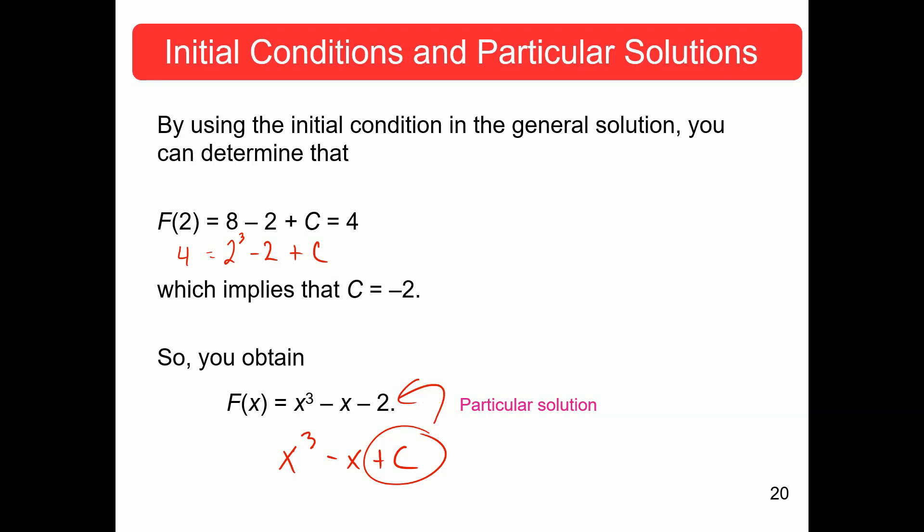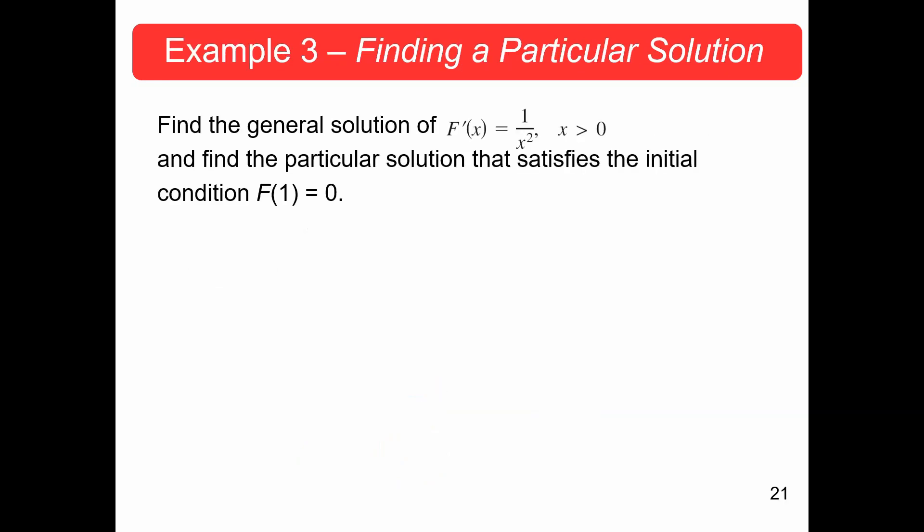All right, so let's actually look and see if we can figure this out on our own. We want to find the general solution of f prime equals 1 over x squared, assuming that x is positive, and find the particular solution that satisfied the initial condition f of 1 equals 0. So, we're going to integrate 1 over x squared dx. We're going to start by rewriting that, the integral of x to the negative 2 dx.